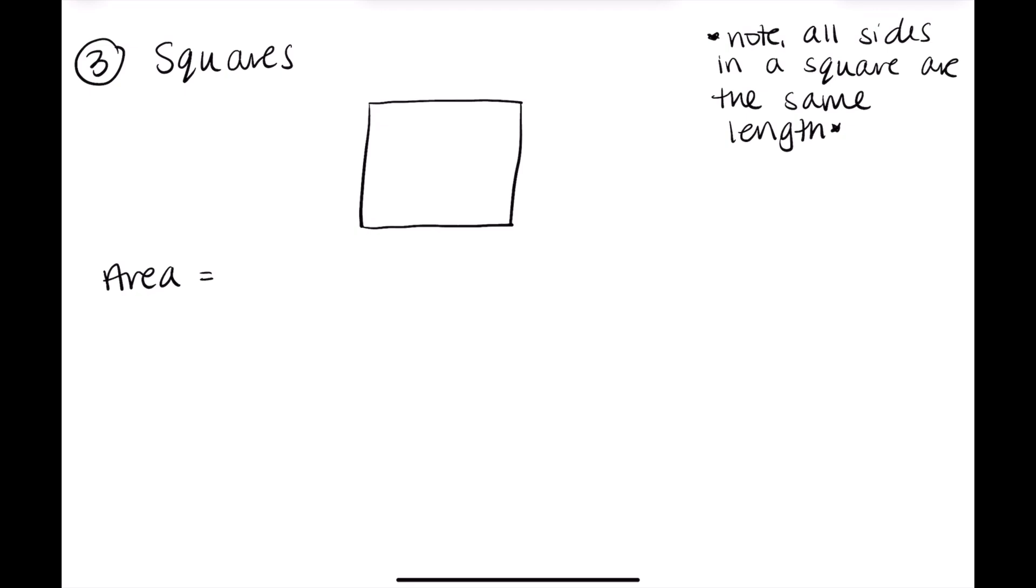So getting into our area formula, we would just have the side squared because normally, as we've seen, it's base times height. But since they're the same, you just multiply the sides together, which in this case would be the side squared.